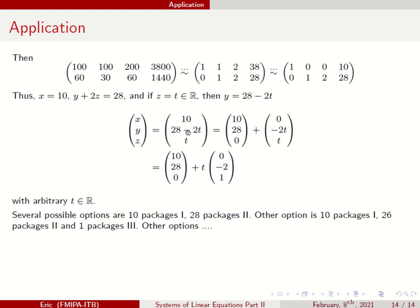You have infinitely many solutions. But don't forget, X, Y, Z is the number of packages, so it should not be negative. So T can be from 0 to 14. You cannot exceed 14 because if you have 15, you have Y is negative and the number of packages cannot be negative.